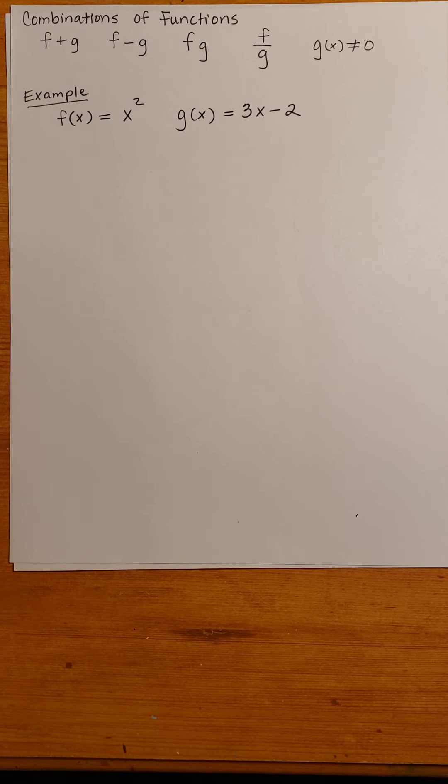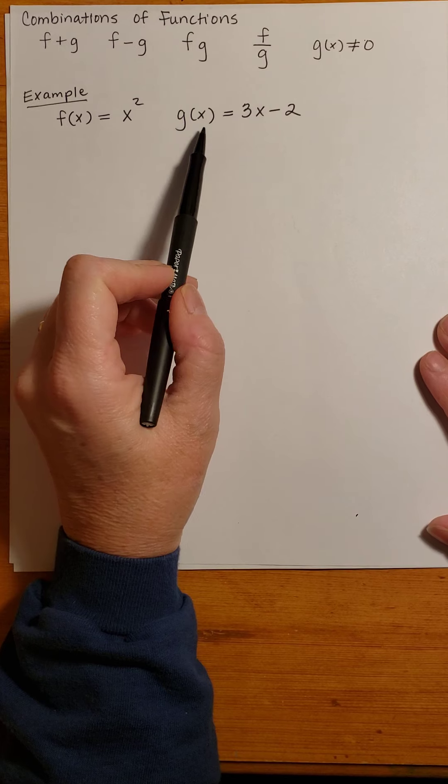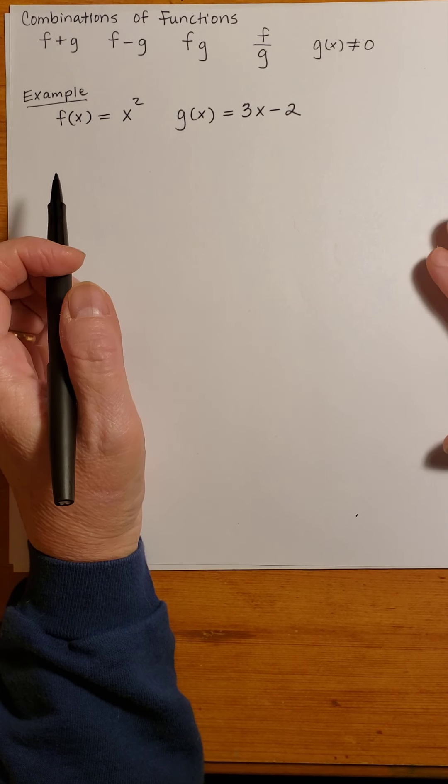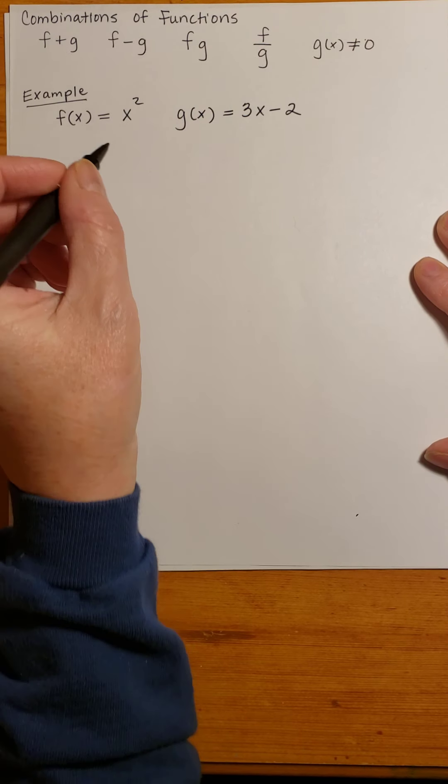So I have two functions here: f(x) = x², g(x) = 3x - 2. And it's really pretty easy. If you want to add two functions, you just add them.